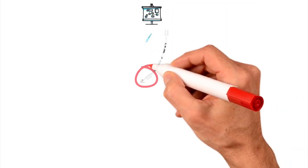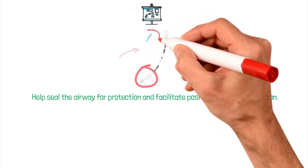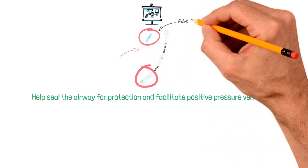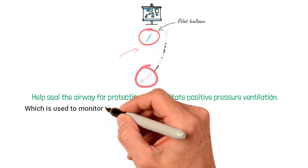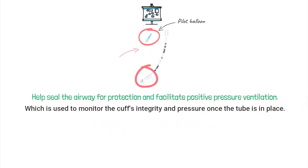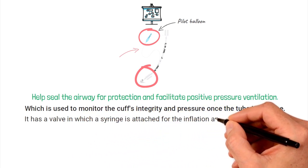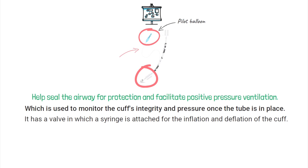The cuff of an endotracheal and tracheostomy tube is designed to help seal the airway for protection and facilitate positive pressure ventilation. However, hanging from the cuff is what's known as a pilot balloon, which is used to monitor the cuff's integrity and pressure once the tube is in place. It has a valve in which a syringe is attached for the inflation and deflation of the cuff.